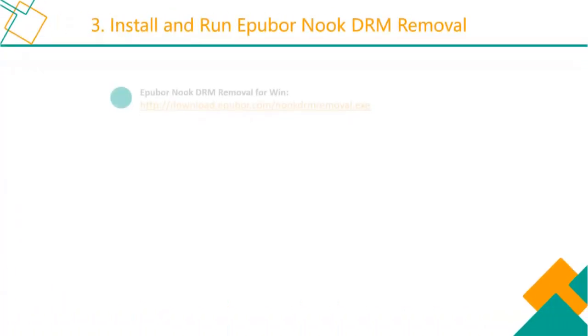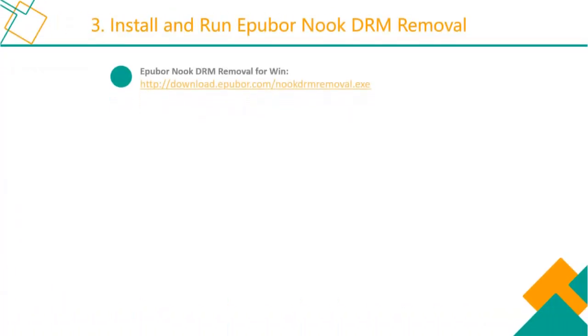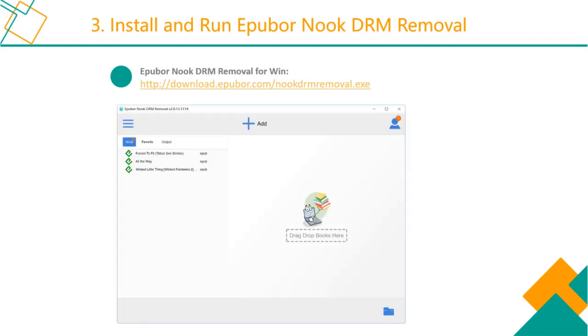Step 3: Install and run ePiper Nook DRM removal. All your downloaded Nook books will be displayed in the left column on the main interface.